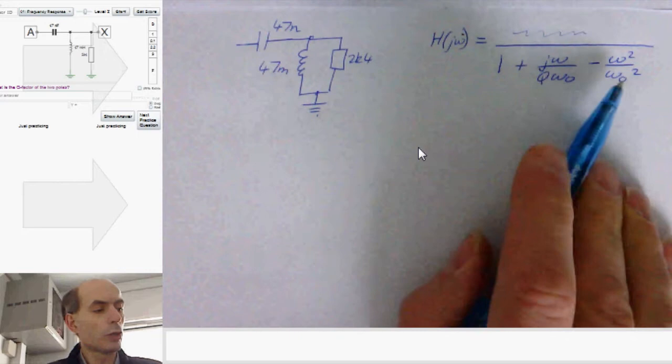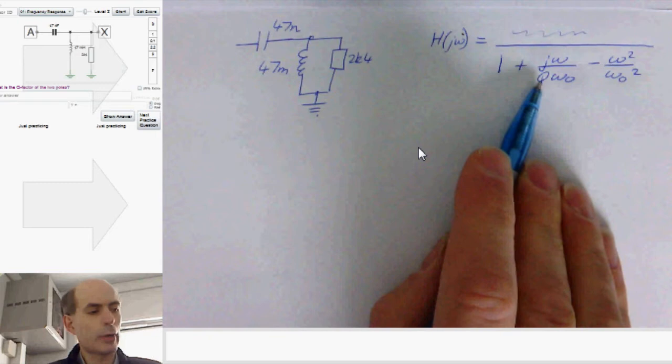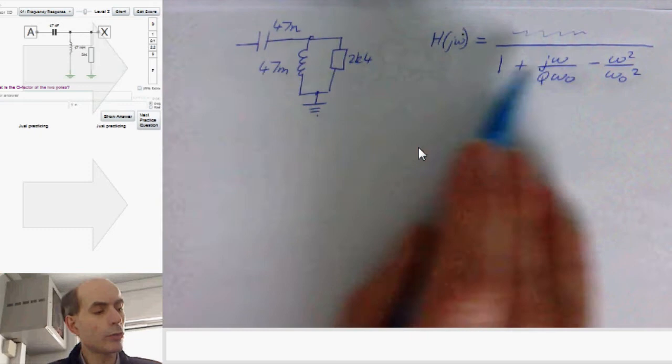And ω₀ is the resonant frequency in radians per second, and Q is the Q factor. So we have to try and make the response of this circuit fit that general form of equation.